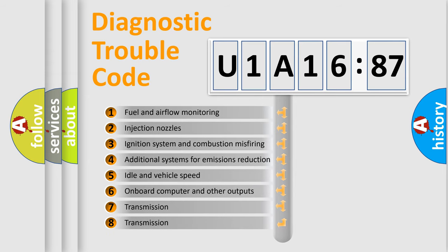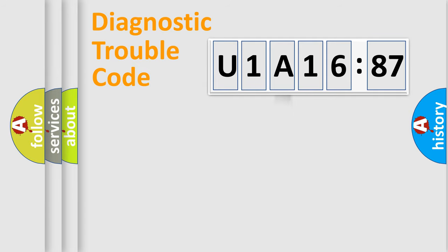The third character specifies a subset of errors. The distribution shown is valid only for the standardized DTC code. Only the last two characters define the specific fault of the group.